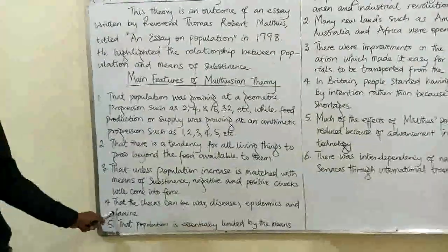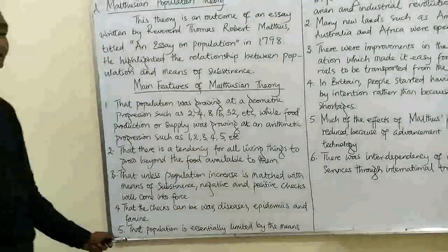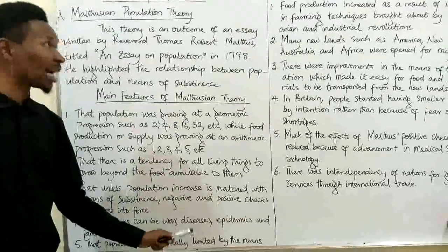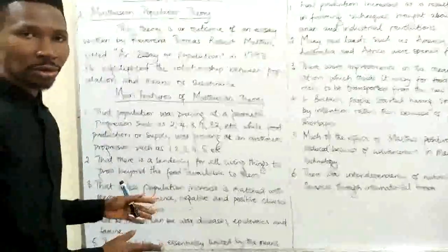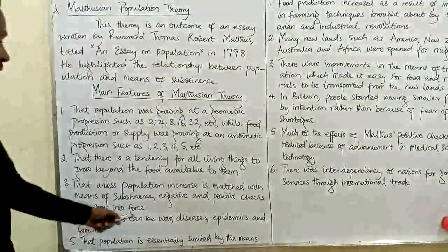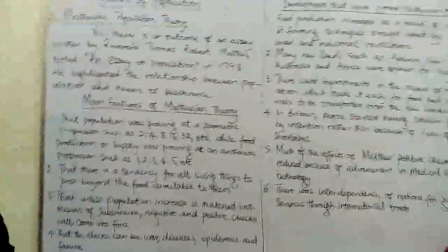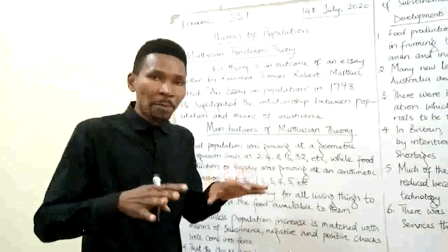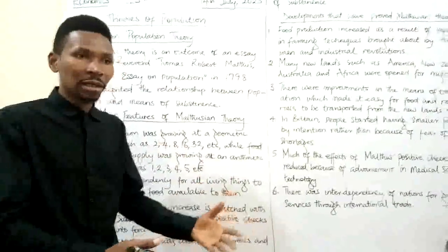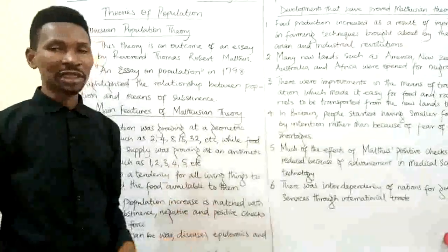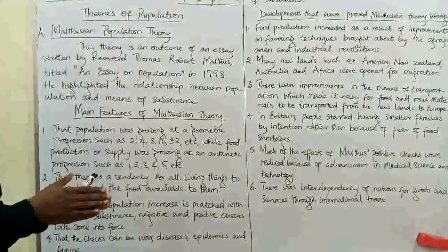The checks can be war, diseases, epidemics, and famine. And then the fifth feature, that population is essentially limited by the means of sustenance. The population will be forced to reduce by these positive checks — war, diseases, epidemics, and famine — which inflict death and casualties, forcing the number of people to reduce to match the amount of food available.